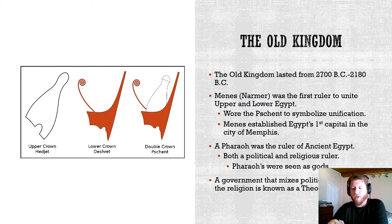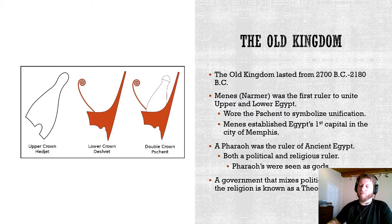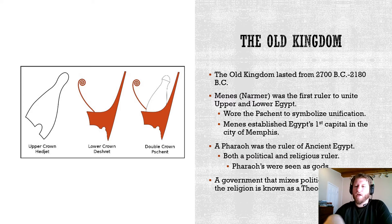We're going to start talking about the Old Kingdom, one of three main periods of Egyptian history. Most people in Egypt lived around the Nile River in what they called Kemhet, meaning 'black land' — the dark, nutrient-rich soil deposited by the Nile's floodwaters. Beyond that was Desheret, the 'red land' or desert, which was barren and uninhabited. We'll throw in Egyptian words here and there as we go.